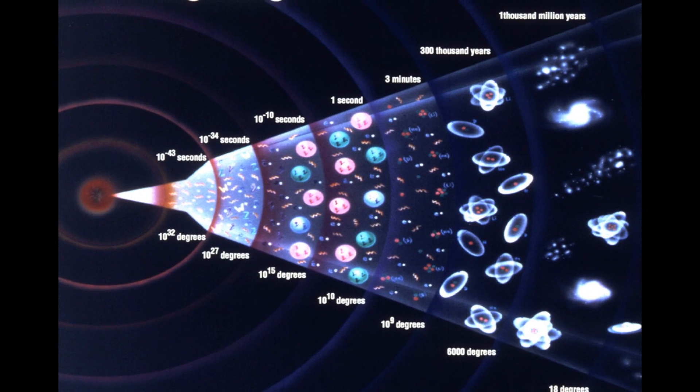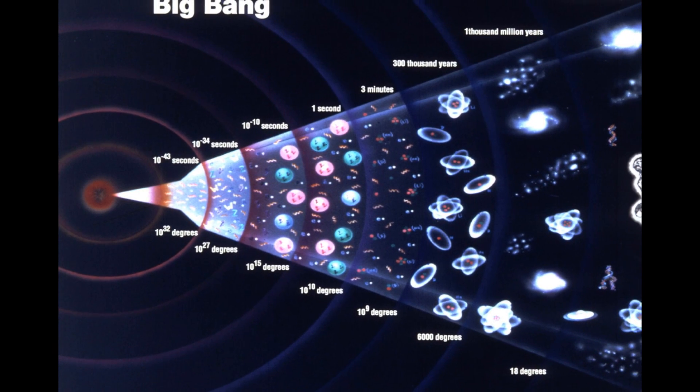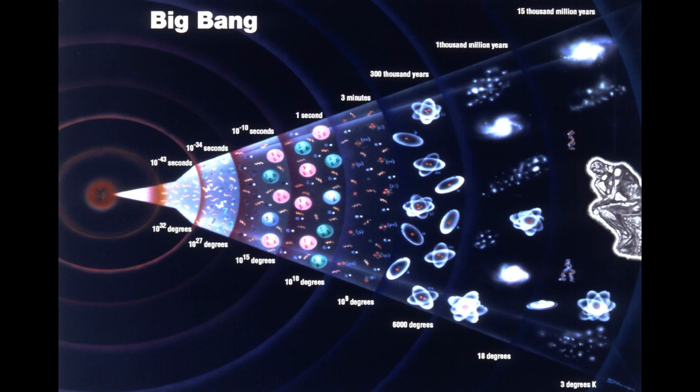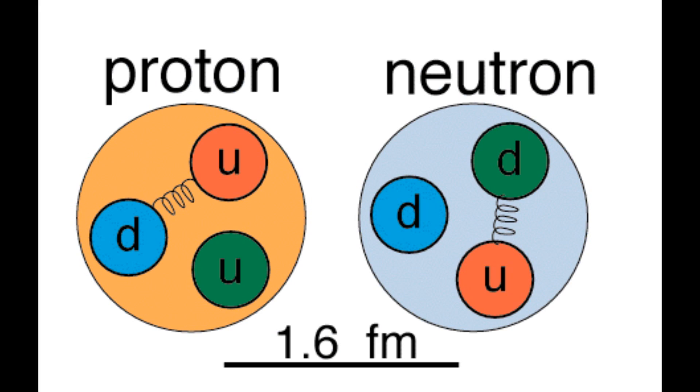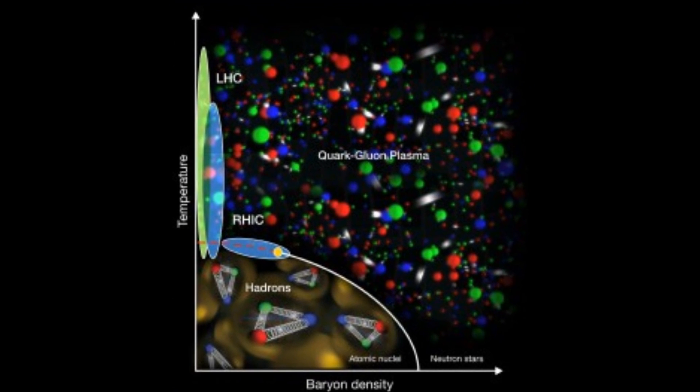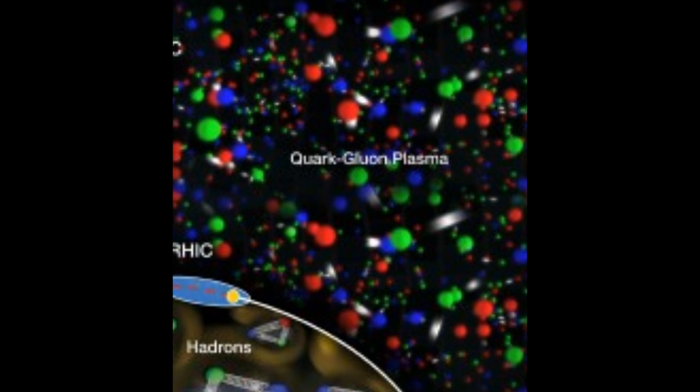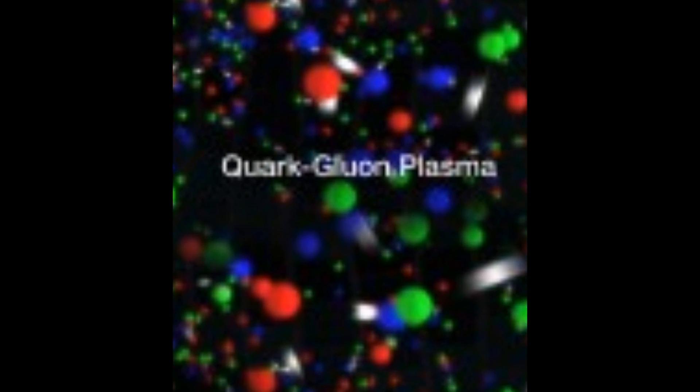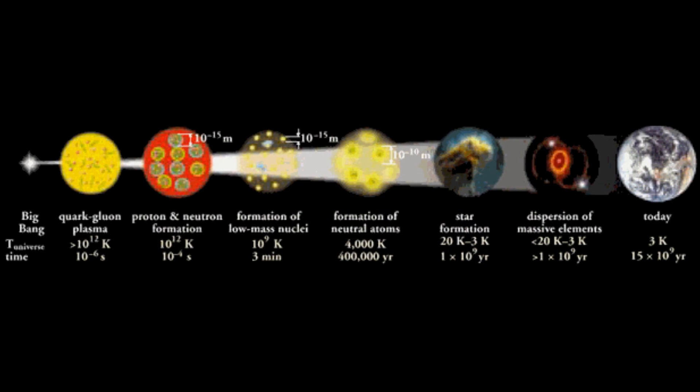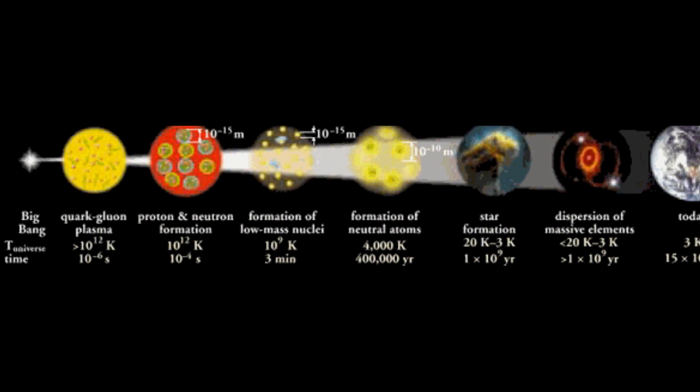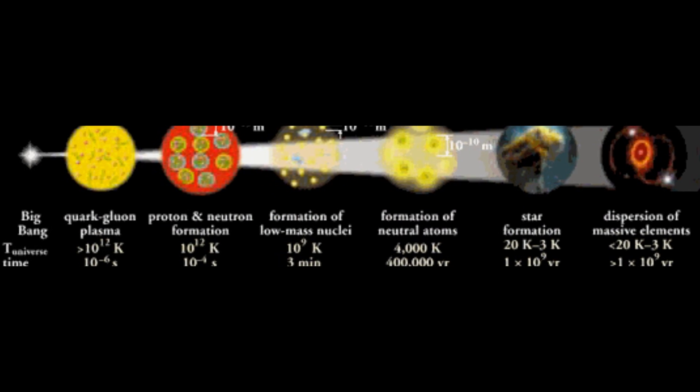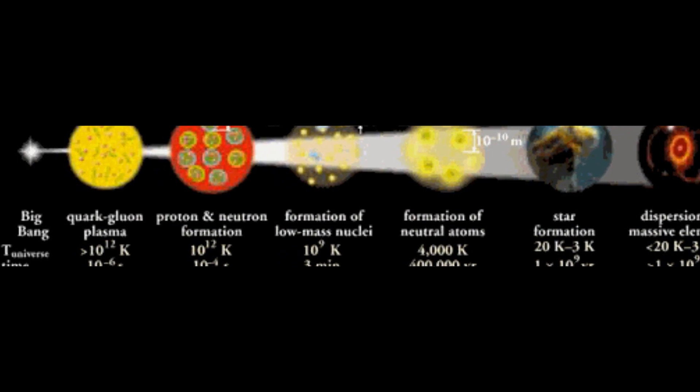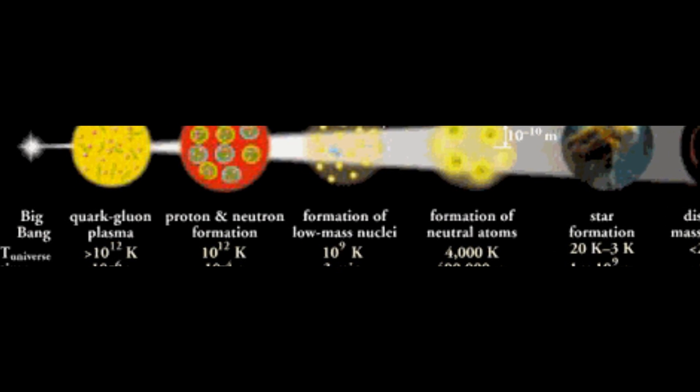So, the farther back in time we look, the higher the temperature and density. Let's follow the history of matter from shortly after the Big Bang to the present. Neutrons and protons are made out of tinier particles called quarks and gluons. At temperatures above 2 trillion Kelvin, the quarks and gluons behave as free particles, and are unable to combine into more complex structures. We call such a state of matter a quark-gluon plasma. When the temperature dropped below 2 trillion Kelvin, 24.1 microseconds after the Big Bang, the quarks and gluons combined into protons and neutrons.